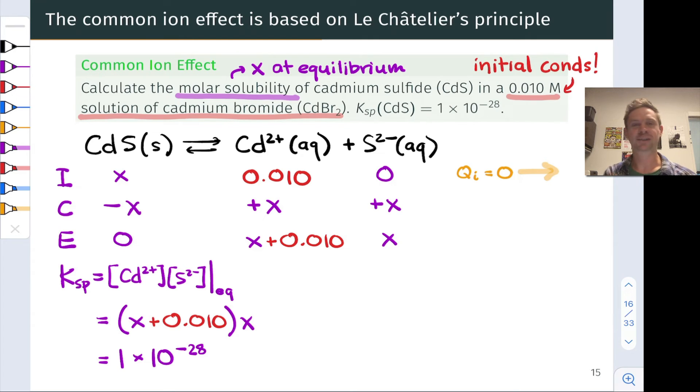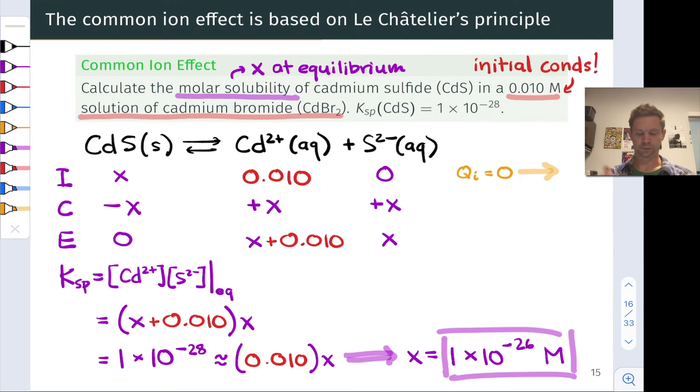Meaning x is going to be really, really tiny, even in relation to 0.010 moles per liter. And so we can assume that this is equal roughly to 0.010 times x, and solve for x then easily, just by dividing by 0.010 on both sides, and we get x is equal to 1 times 10 to the negative 26th moles per liter.